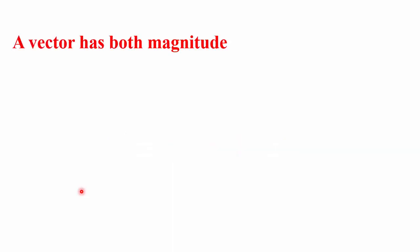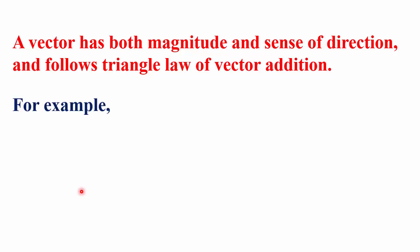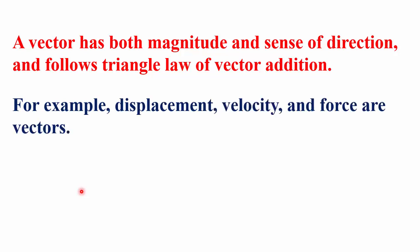We are going to discuss about resolution of vectors in this lecture. So what is a vector? In physics, some physical quantities have both magnitude as well as direction and follow the triangle law of vector addition — such quantities are called vectors. For example, displacement, velocity, and force are vectors. Note that current is not considered a vector even though it has magnitude and direction, because it does not follow the triangle law of vector addition.